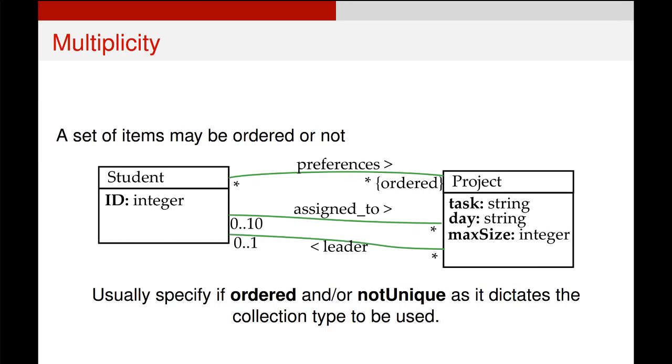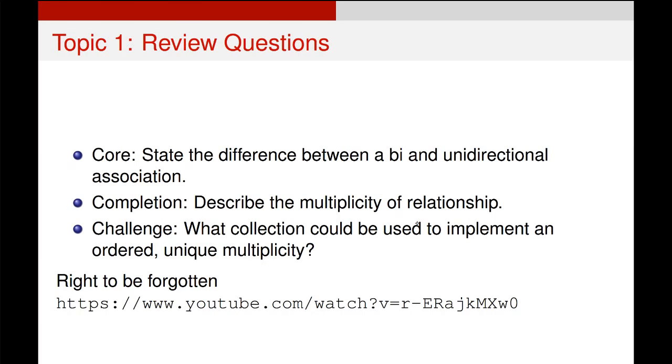Another example that I haven't shown here is not unique. So with these stars down here, we assume natively that this is a unique relationship. So we can't assign, for example, the same student to the same project multiple times. It makes no sense. However, in some cases, you don't want to enforce that uniqueness. And so you would write not unique in these little curly brackets near there if you wanted to imply that as part of the multiplicity.